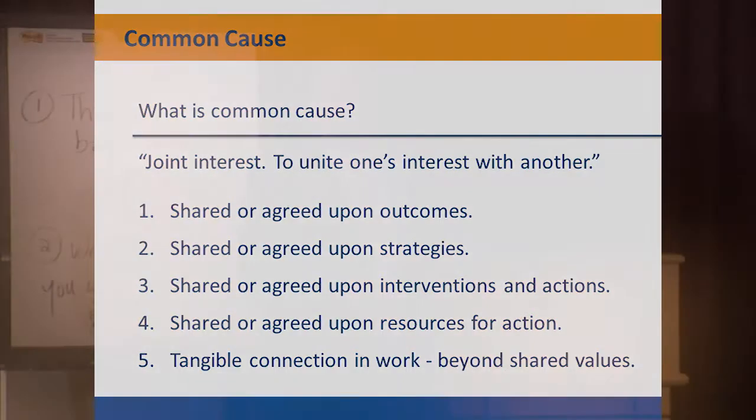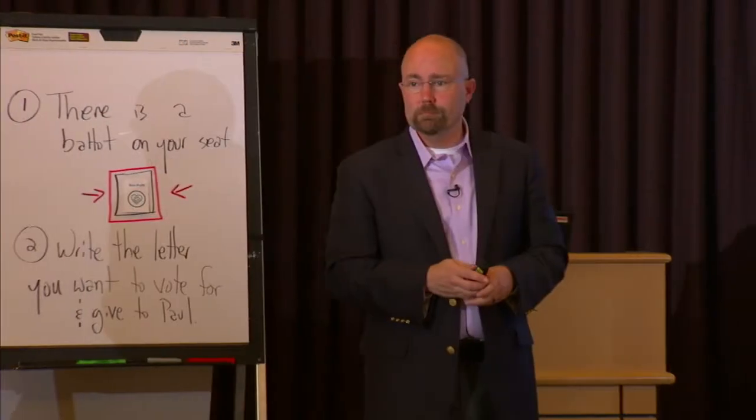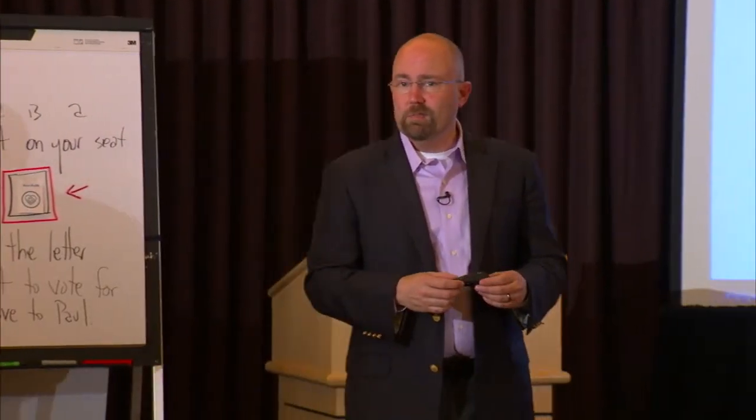In a common cause or collective impact framework: does your community have the big outcomes it aspires to see for young people? Is there agreement at the top level about what those outcomes should be? What are some things we want to be true for every young person? What positive outcomes would we want?